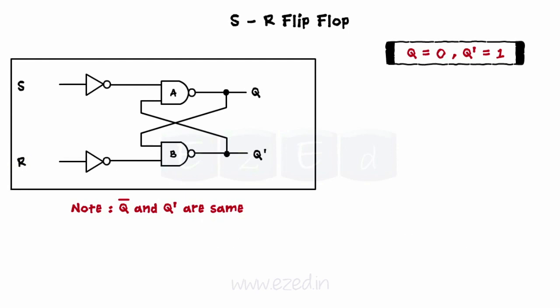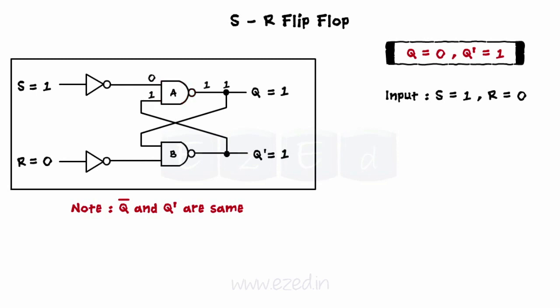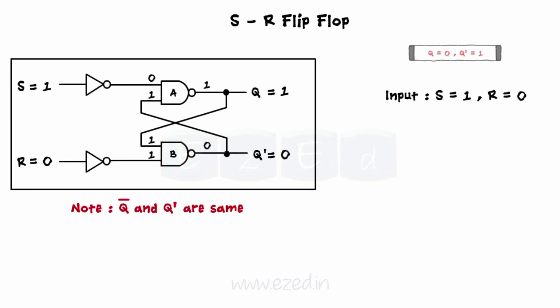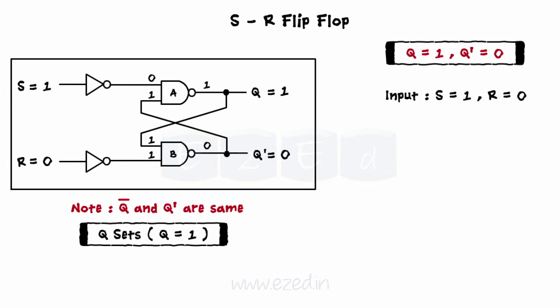Consider the third case with S equals 1 and R equals 0. We have Q equals 0 and Q dash equals 1. Gate A receives inputs 0 and 1, so its output becomes 1. Gate B receives inputs 1 and 1, hence its output becomes 0. As we can see, Q equals 1 — that is, Q sets. Thus, S equals 1 condition sets the output, which signifies the name of the input as S.